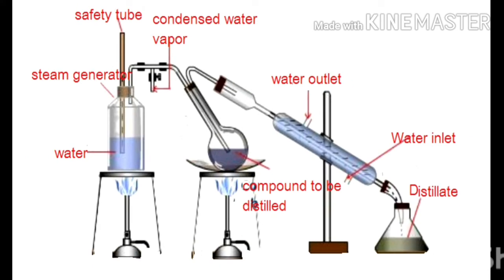Procedure: The material to be distilled — the non-aqueous liquid — along with a little amount of water is placed in the distillation flask. The steam generator is filled with water. Heat is provided to both the steam generator and distillation flask simultaneously to get a uniform flow of steam through the boiling mixture. The material inside the distillation flask gets heated; the steam carries the volatile oil into the condenser. From the condenser, the distillate is collected into a receiver. This distillate contains both aqueous and non-aqueous phases, which can be separated using a separating flask.